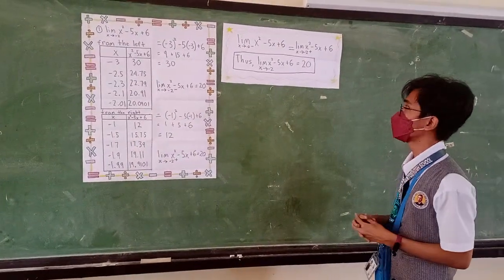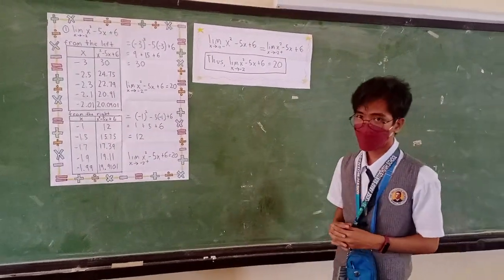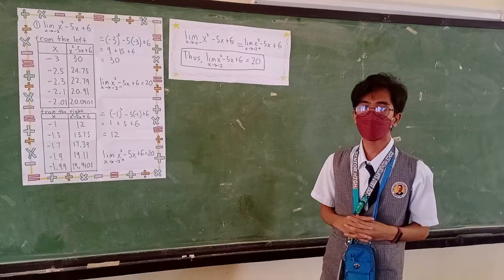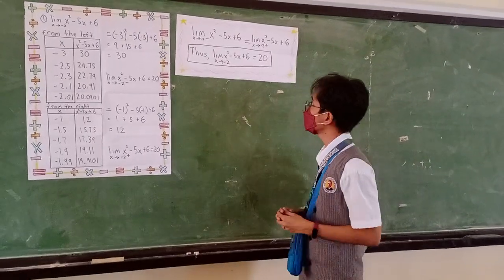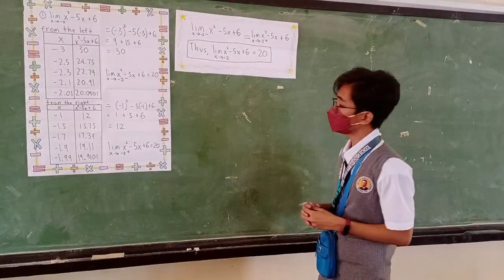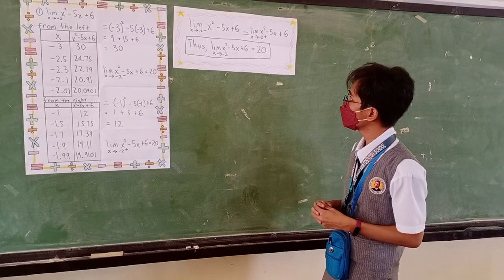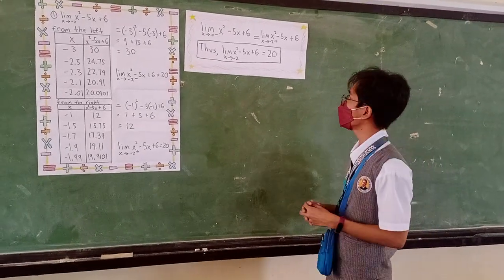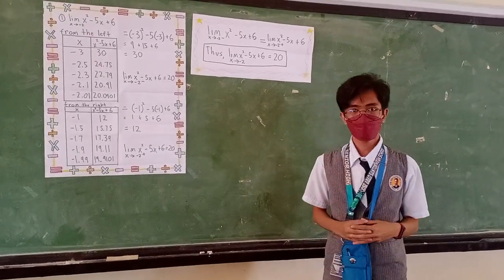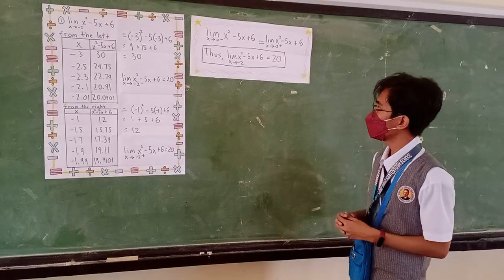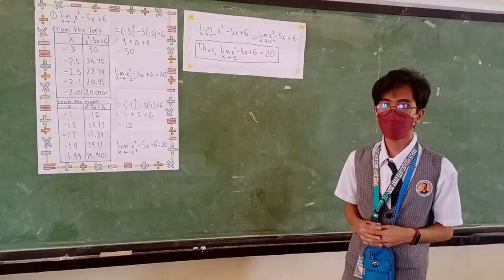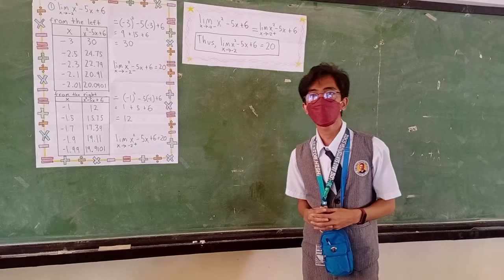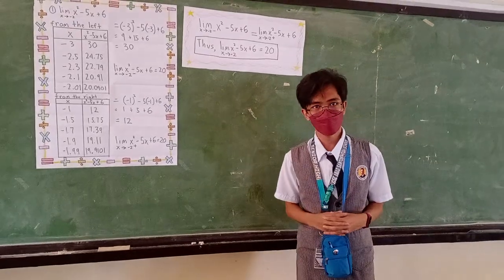Since the limit of the function x squared minus 5x plus 6 as x approaches negative 2 from both the left side and the right side is equal to 20, we can say that the limit of the function x squared minus 5x plus 6 as x approaches negative 2 is equal to 20. Thank you very much.